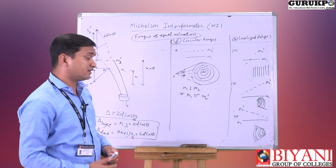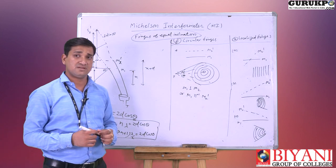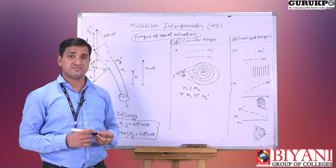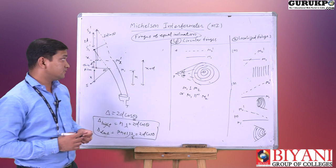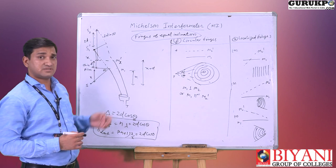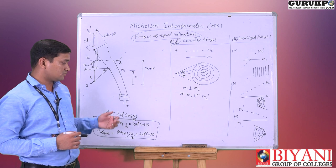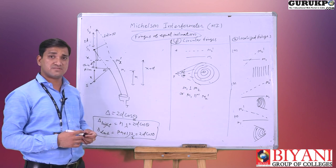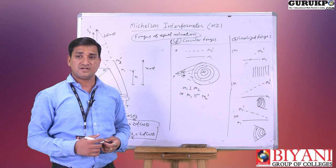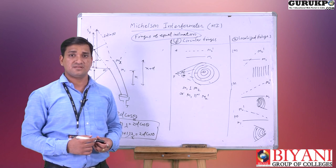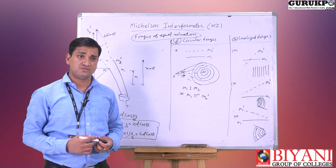This completes the discussion of the Michelson interferometer. We saw how the Michelson interferometer works and the different types of interference fringes observed due to the path difference between the two mirrors. Thank you for watching this video. Please like, comment, and share this video.